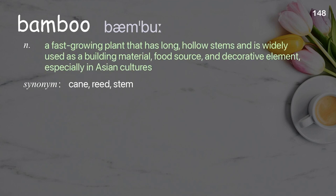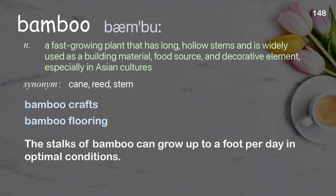Bamboo: a fast-growing plant that has long, hollow stems and is widely used as a building material, food source, and decorative element, especially in Asian cultures. Examples: Bamboo crafts. Bamboo flooring. The stalks of bamboo can grow up to a foot per day in optimal conditions.